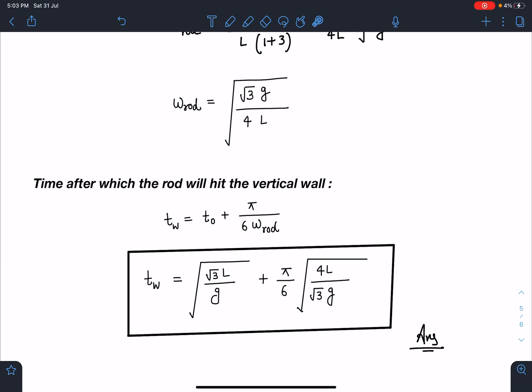Once I know this ω of rod, I can say the time after which rod will hit the wall. Up till t = t₀ bead was present, and after that angle is π/6 and the corresponding ω is this. So θ = ωt logic I can use for constant ω. When I substitute the value, I get total time to hit the wall t_w = √(√3 L/g) + (π/6)√(4L/√3 g).